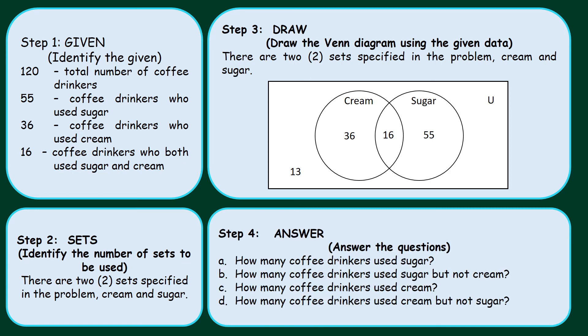Step 4: Answer the given questions. Letter A: How many coffee drinkers used sugar? We have 55 plus 16, we have 71 coffee drinkers who used sugar. B: How many coffee drinkers used sugar but not cream? That's right, we have 55 coffee drinkers. Letter C: How many coffee drinkers used cream? We have 36 plus 16 is 52 coffee drinkers. D: How many coffee drinkers used cream but not sugar? That's right, we have 36 coffee drinkers.